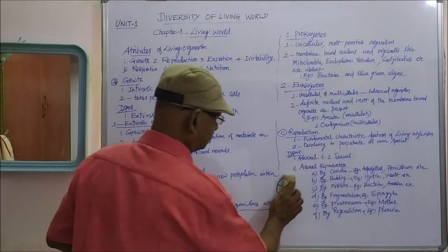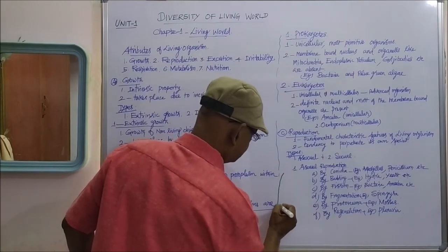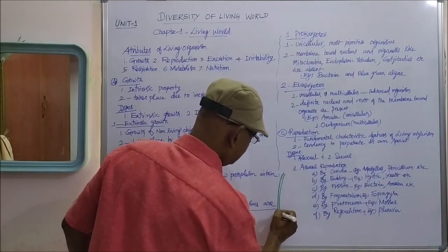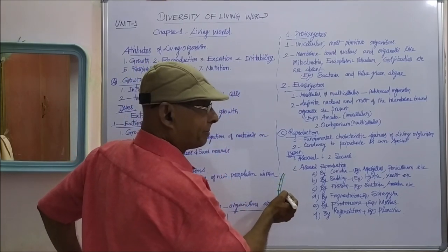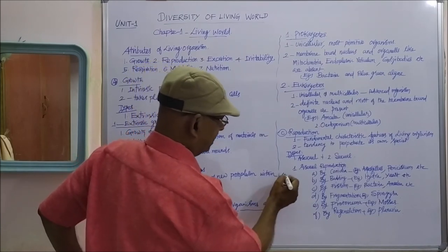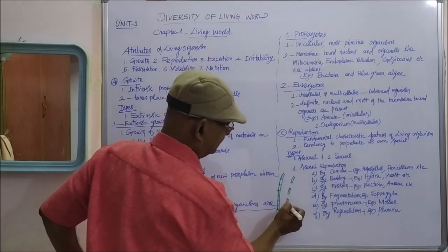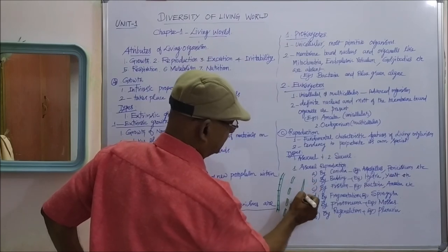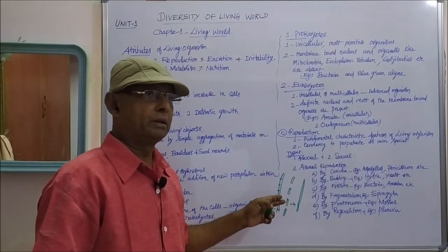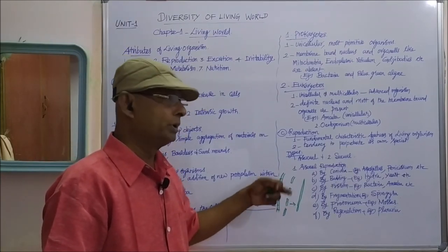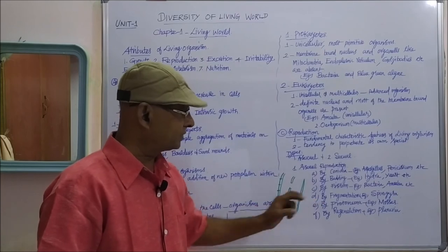The next method is fragmentation, which occurs in Spirogyra, a filamentous green alga where cells are arranged one above the other. The filament of Spirogyra is broken into a number of fragments, and each one grows into a new thallus of Spirogyra. For example, if four fragments are formed, four new Spirogyra organisms will be produced by cell division. That is fragmentation.